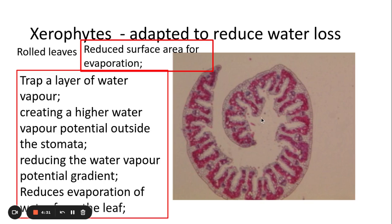By having these rolled leaves, we trap a layer of water vapor in this area here. Now if we're trapping a layer of water vapor close to the stomata, it means that we're creating a high water vapor potential outside of the stomata, therefore reducing the water vapor potential gradient and reducing the evaporation of water vapor from the leaf. It's really important we use the term water vapor when describing these adaptations in order to get as many marks as possible.